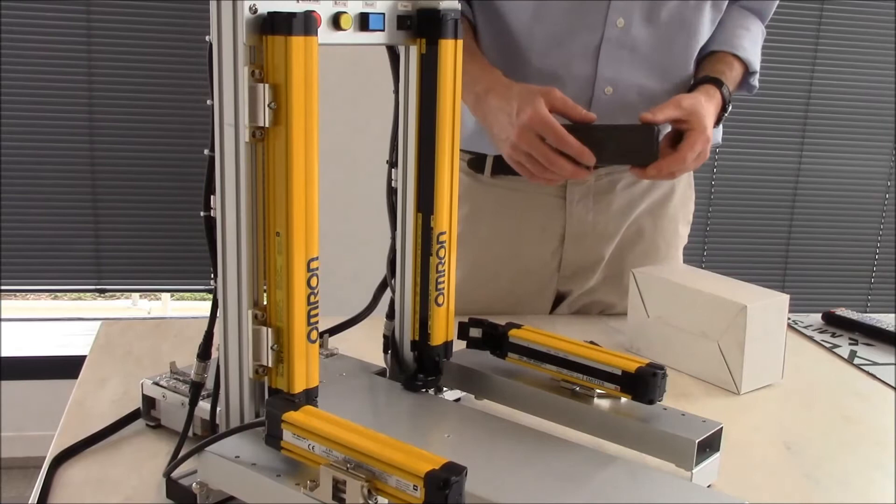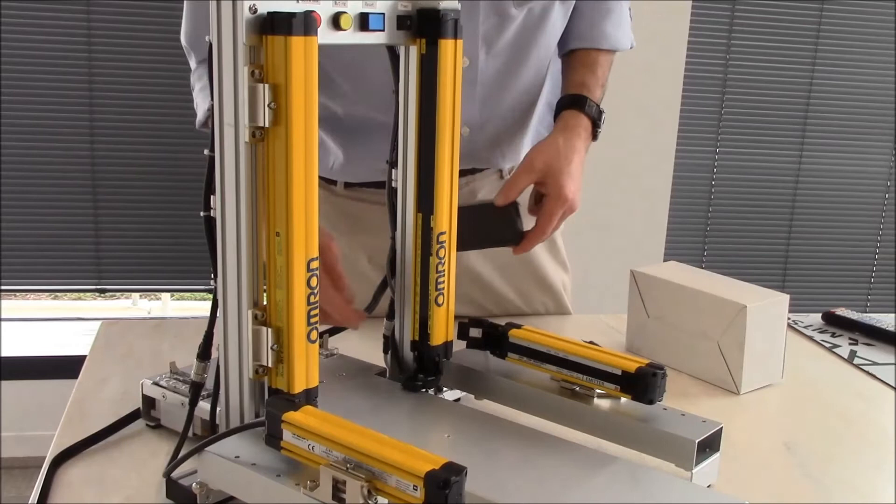Today I'm going to demonstrate how to set up the floating blanking using the DIP switch settings in the F3SG safety light curtain.